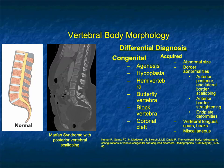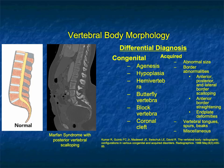The third category: deformity or abnormal vertebral body morphology. This case shows a nice example with scalloping of the vertebral bodies, particularly well seen in the sacrum — something you commonly see with Marfan's syndrome. Other causes include neurofibromatosis. The differential for congenital causes includes agenesis, hypoplasia, hemivertebrae, butterfly vertebrae, block vertebrae, and coronal cleft. Acquired causes include abnormal size as in Paget's disease, border abnormalities, anterior/posterior/lateral scalloping from neurofibromatosis or Marfan's, anterior border straightening, end plate deformities, vertebral tongues, spurs, beaks, and miscellaneous.